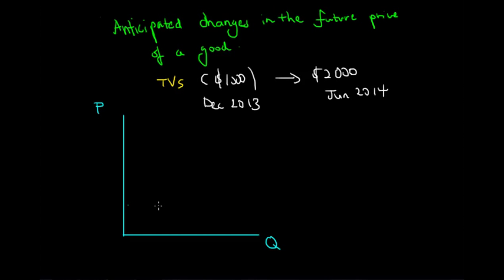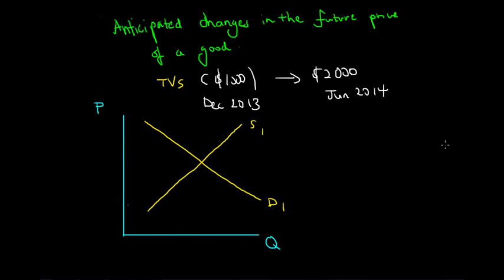Assuming that a TV has a relatively elastic supply curve and also an elastic market for simplicity, we can see that the equilibrium price of the TV is currently $1,000 and the equilibrium quantity traded is Q1.